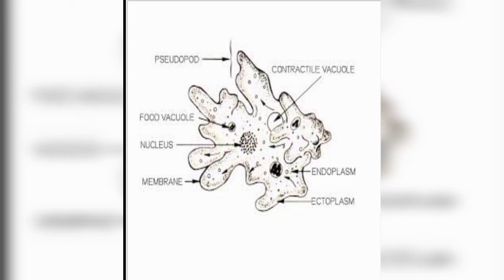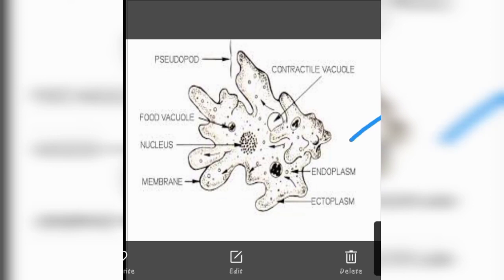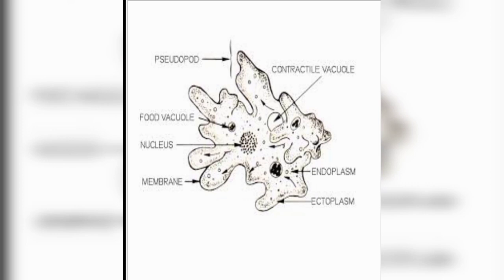Now let's discuss the structure of amoeba. You can see the nucleus and the cell membrane. The cytoplasm is differentiated into two parts: the outer part is called ectoplasm, and the inner granular part is called endoplasm. There is also a contractile vacuole, whose function is to expel excess water from the body. Another structure present is pseudopods.